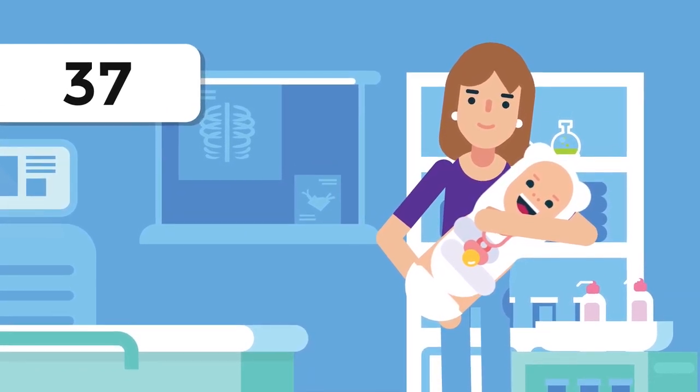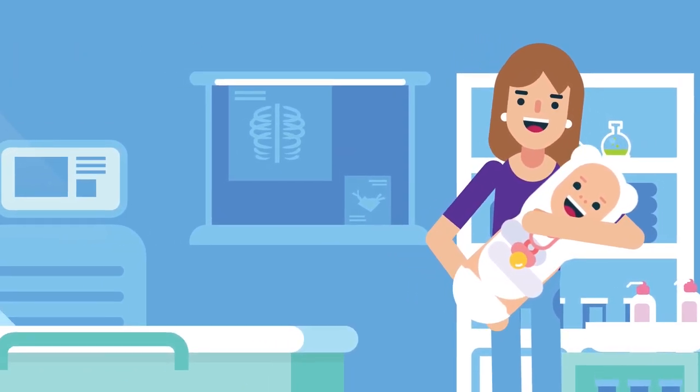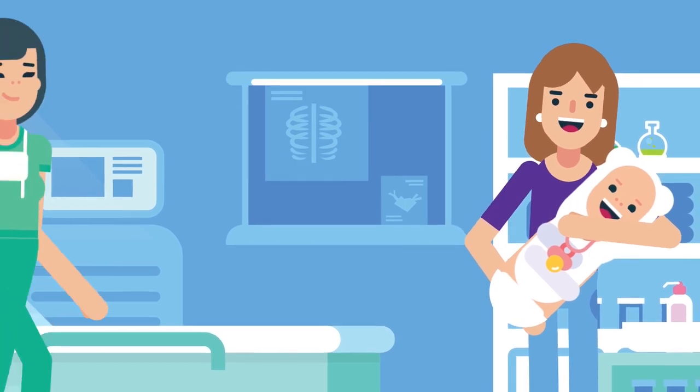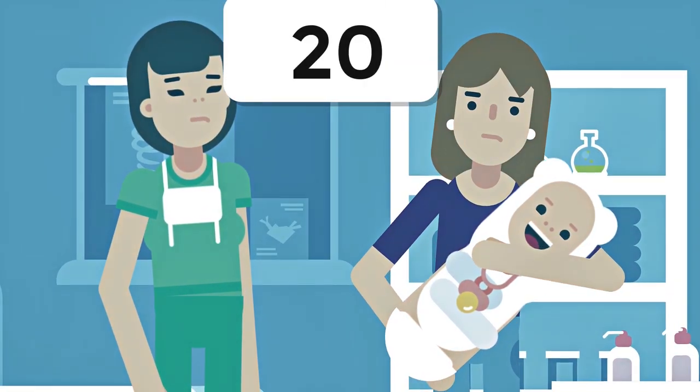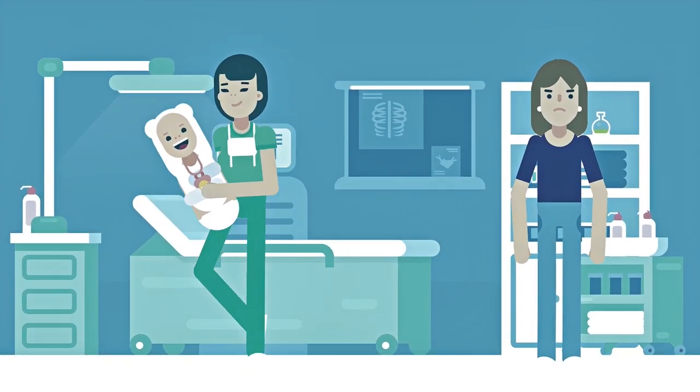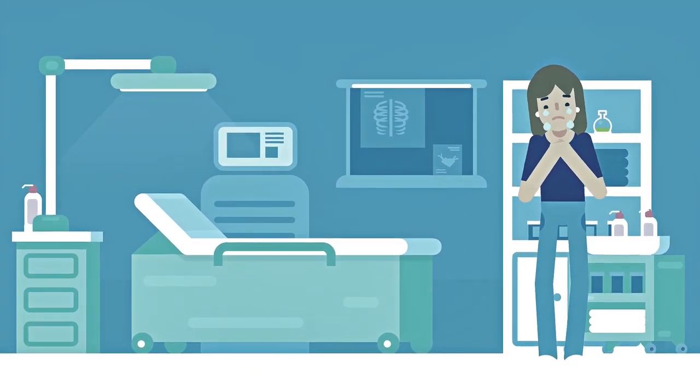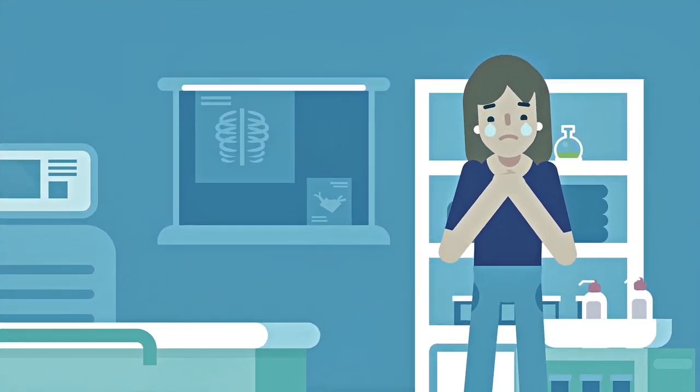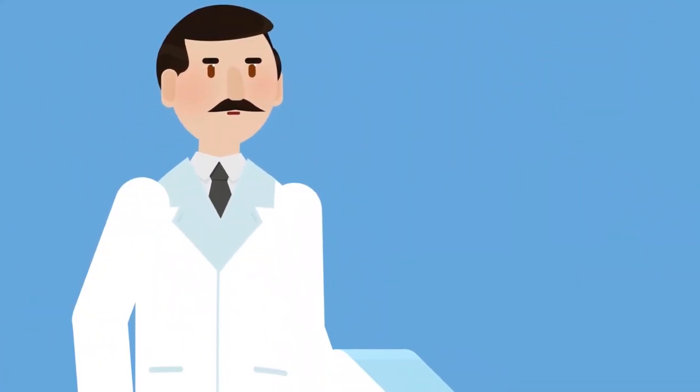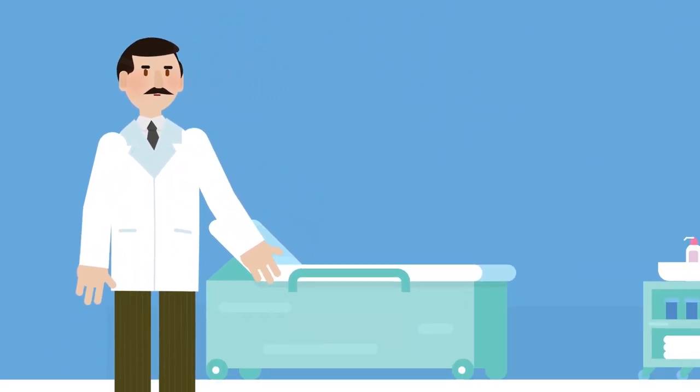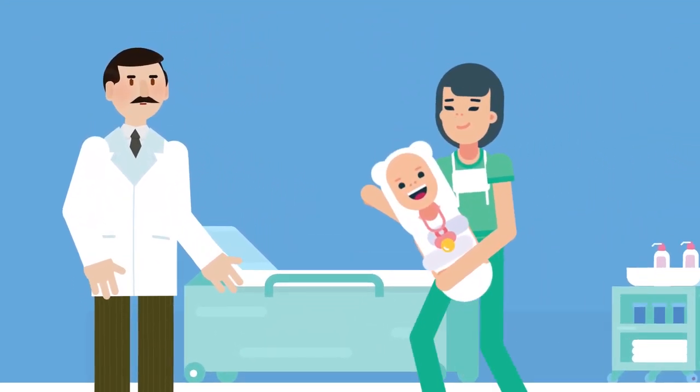A child born before the 37th week of pregnancy is considered premature. In the 21st century, such children receive high-quality medical care and in most cases survive. At the beginning of the 20th century, premature babies were refused at hospitals, since doctors could do nothing to help them. Premature babies often died and everyone accepted it, believing that such children were destined to die. Until a man appeared who found a solution and saved thousands of lives.